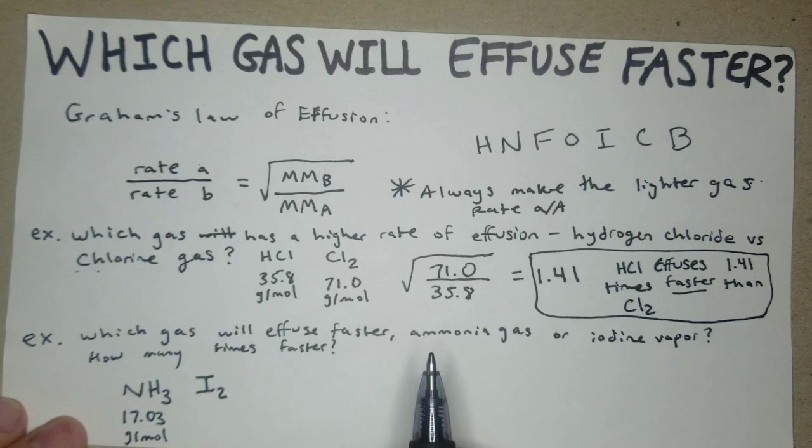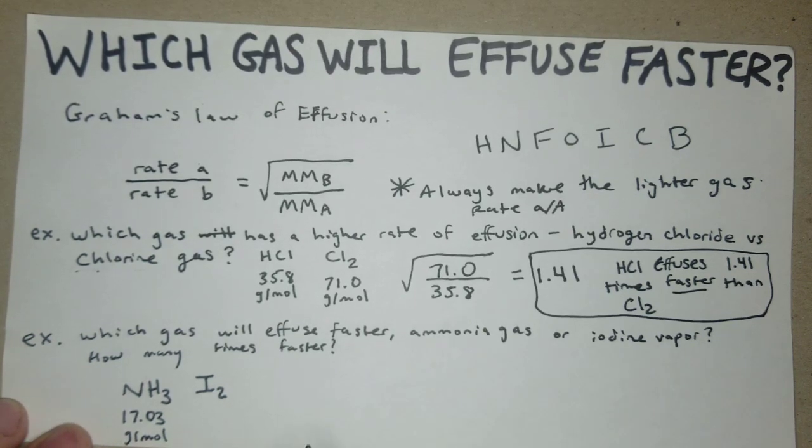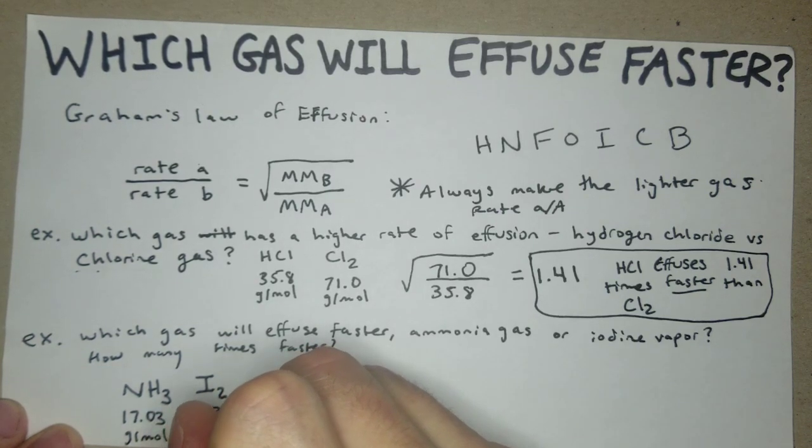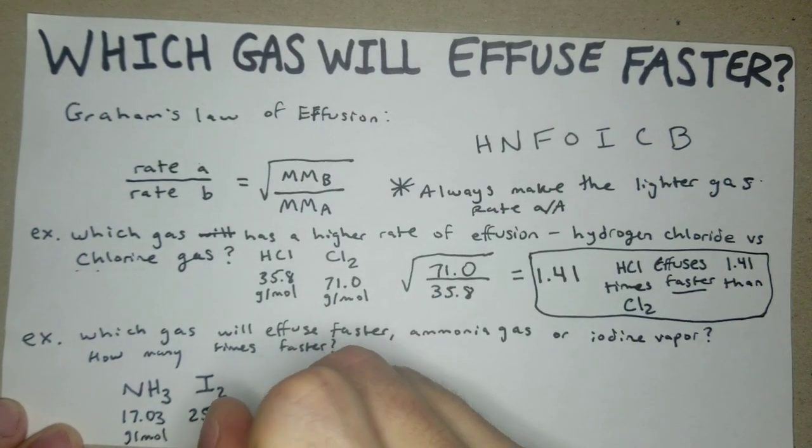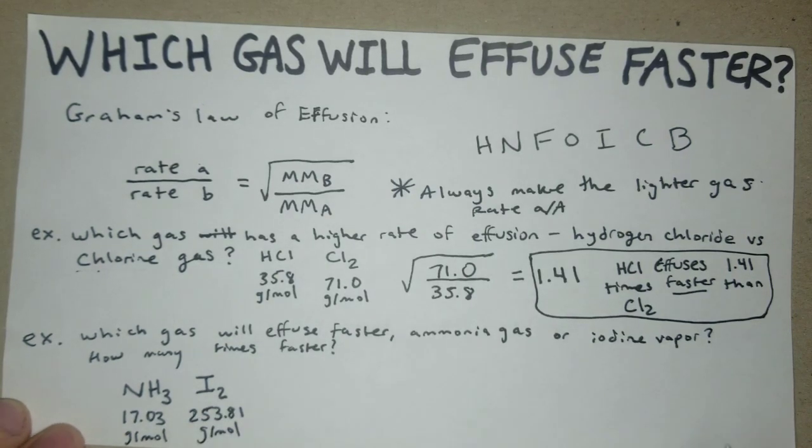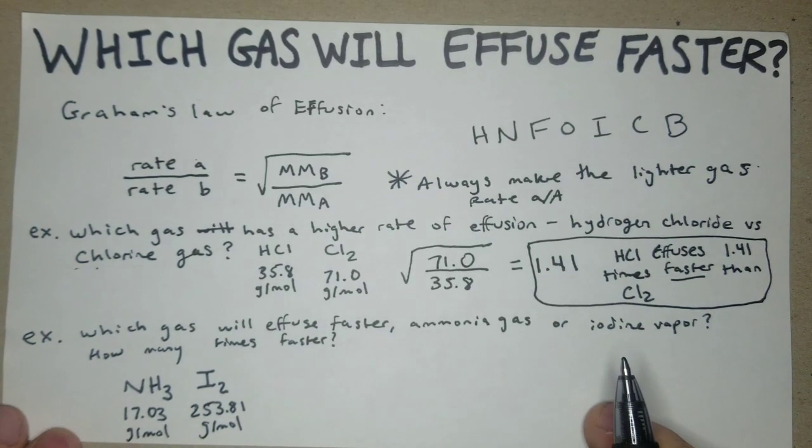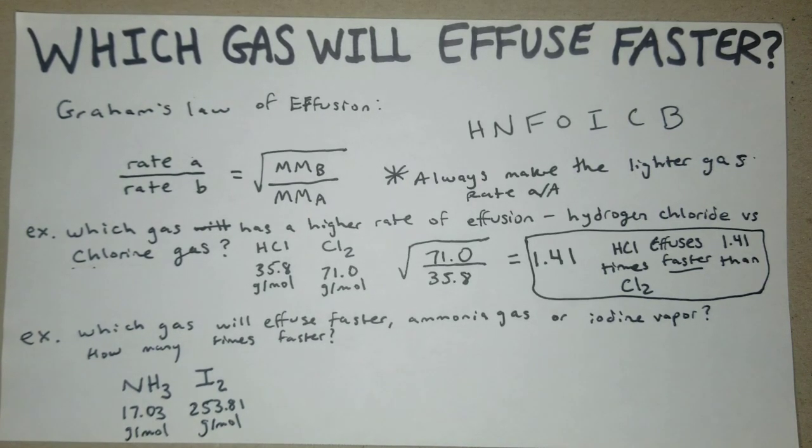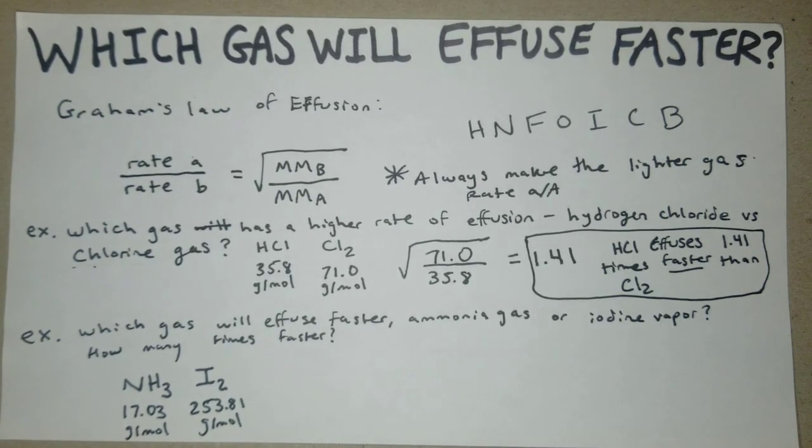Right there you can already answer the question. If this was like some kind of final exam or something and you're running out of time, just even looking at the weight of one atom of iodine, you already know that it's going to be way heavier. So that will be the slower of the two. Ammonia gas is going to be the faster effuser, so right there that's the first answer.